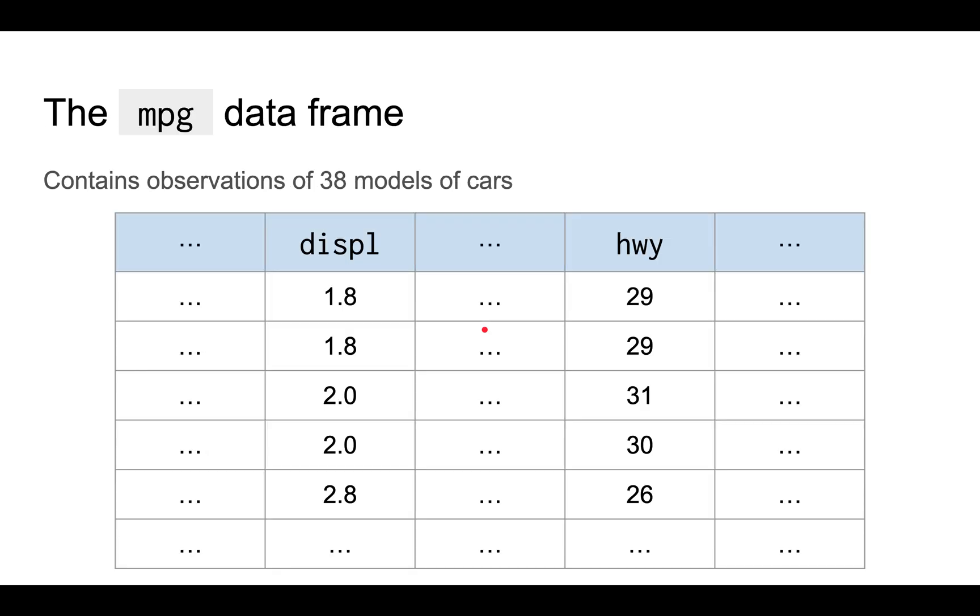To illustrate how the ggplot2 package works, we'll be using the mpg data frame, which contains observations on 38 different models of cars. In particular, we will be focusing on two columns, the displacement and the highway miles per gallon.